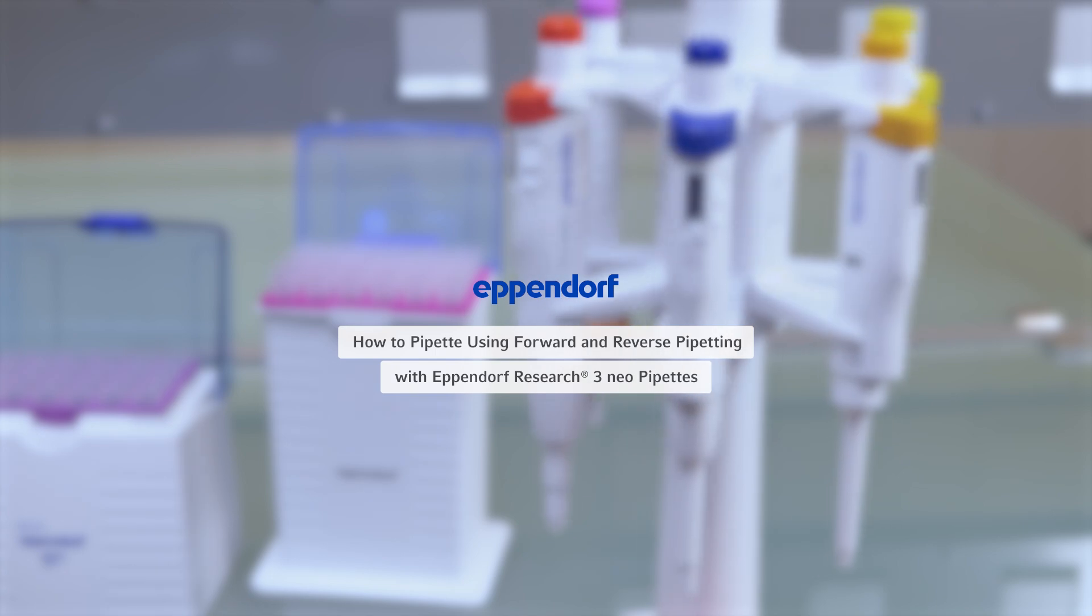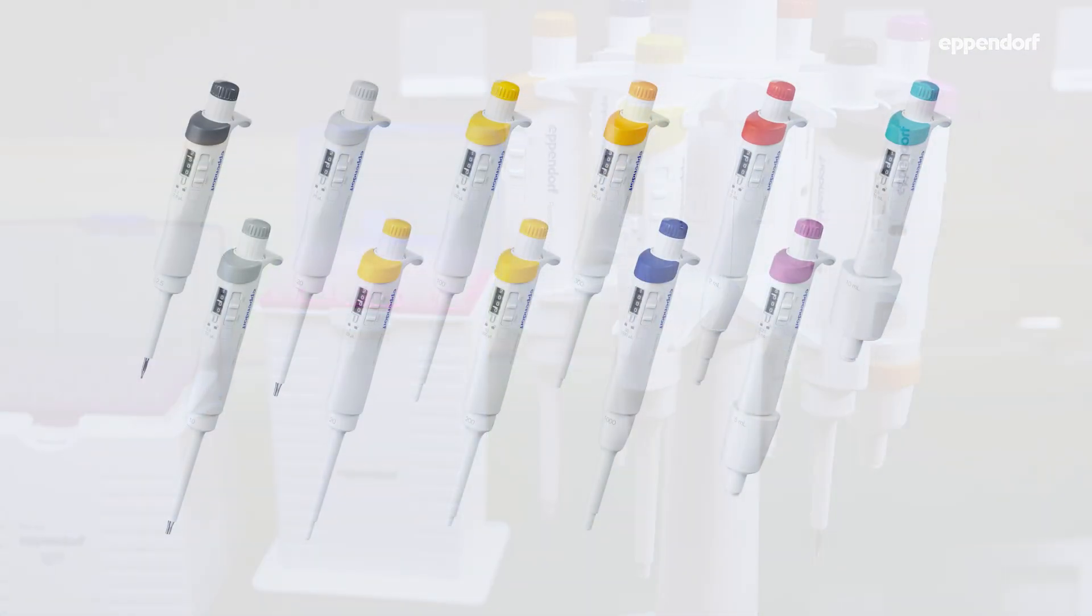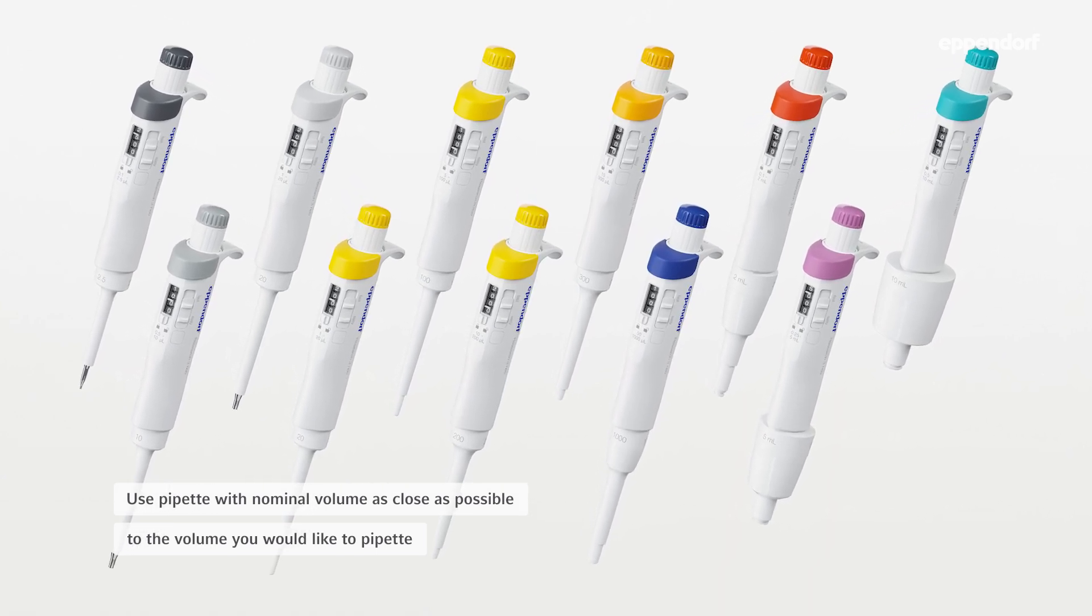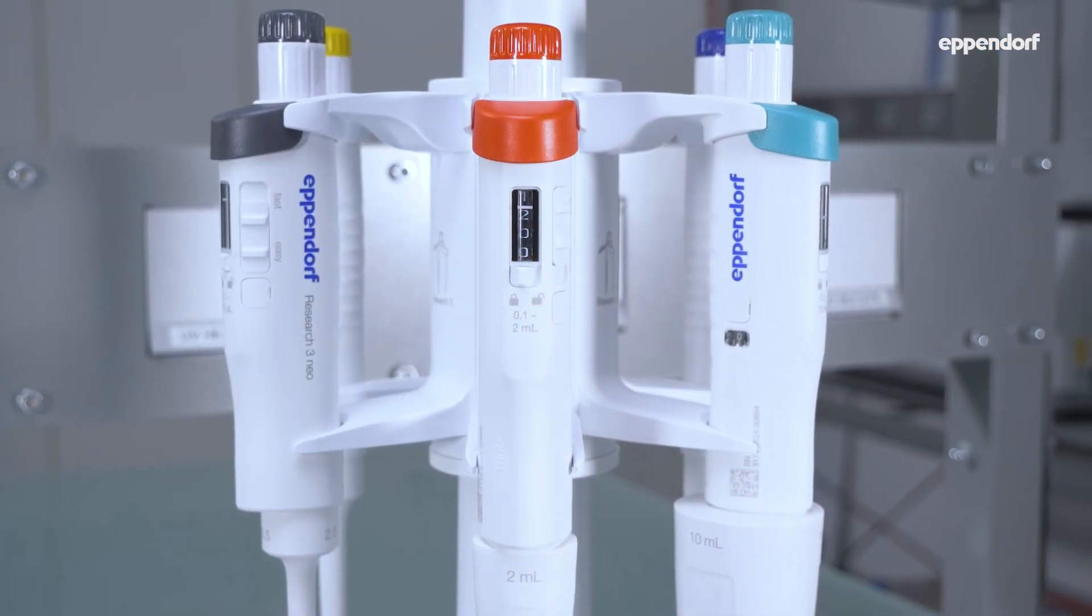The volume range of Eppendorf pipettes is printed on the pipette and represented by a color code. You should always choose a pipette with a nominal volume that is as close as possible to the volume you want to pipette, no matter if you are using the standard forward pipetting technique or reverse pipetting.